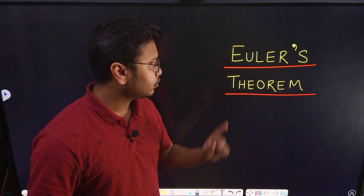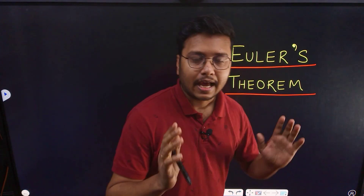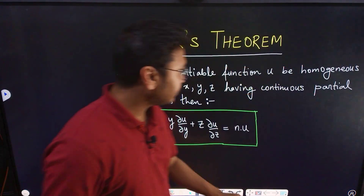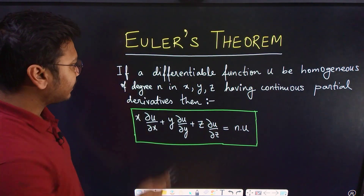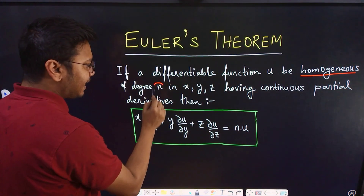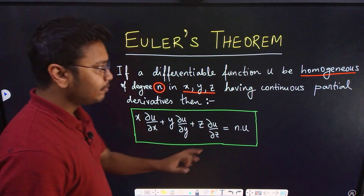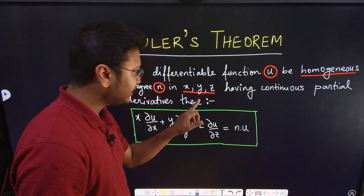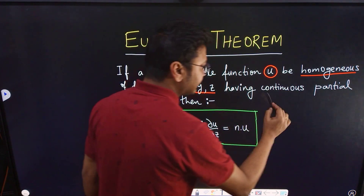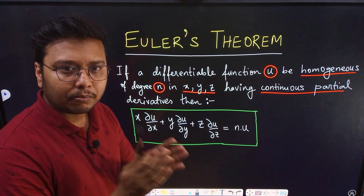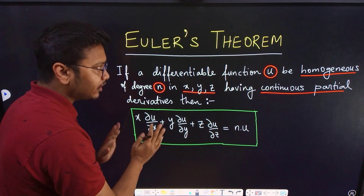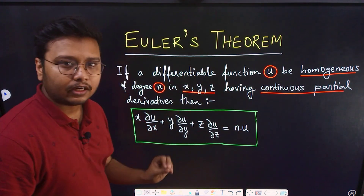Hello everyone. In this video we are going to talk about Euler's theorem and we are going to do two problems related to it. Let's quickly take a look at the statement: if a differentiable function u is homogeneous of degree n in x, y, z, and it has continuous partial derivatives, then this equation involving the partial derivatives is called Euler's theorem.